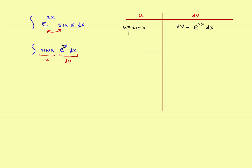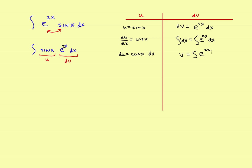Now we'll do exactly what we've done before: take the derivative of the u part and take the antiderivative of the dv part. The derivative of u with respect to x is the cosine of x, so du is equal to the cosine of x dx. On the dv side, I'm going to find the antiderivative of both sides, integrating e to the 2x dx.